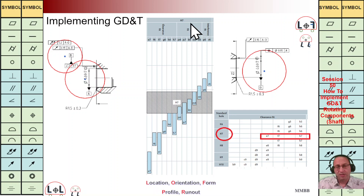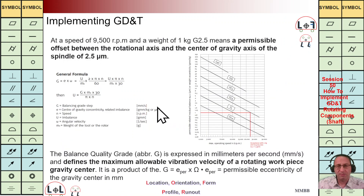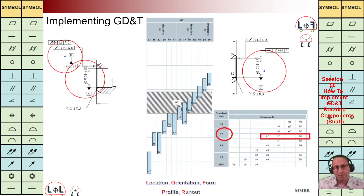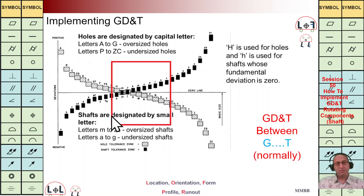We are in a clearance fit, not a transition fit. For the right-hand side we use capital H7 for the hole. For the shaft we have used lowercase h7, which means we are exactly on the border between clearance and transition fit. H7 and h7 — we are exactly here, and we can see h7 is the last column in the clearance fit section.